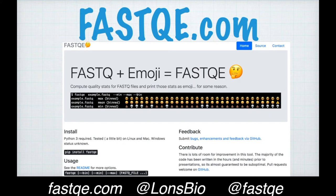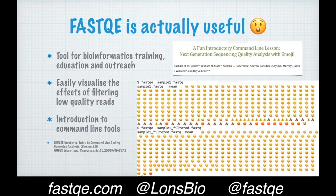FastQE is available online. You can get it from PIP or Bioconda. And one thing that it's been useful for is in education. Rachel, Jax, Ray Enke, and others have been using it in an undergraduate course to much success. I'm really pleased that they've found this tool and written a little course around it. What they use it for is to introduce students to the command line, and as you can see here, you can easily visualize the effects of filtering low-quality reads.